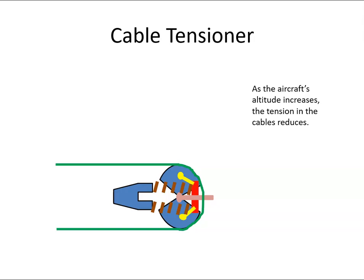To overcome that, there is a cable tensioner included in the system. It's made up of this crosshead and these springs and these variable halves.